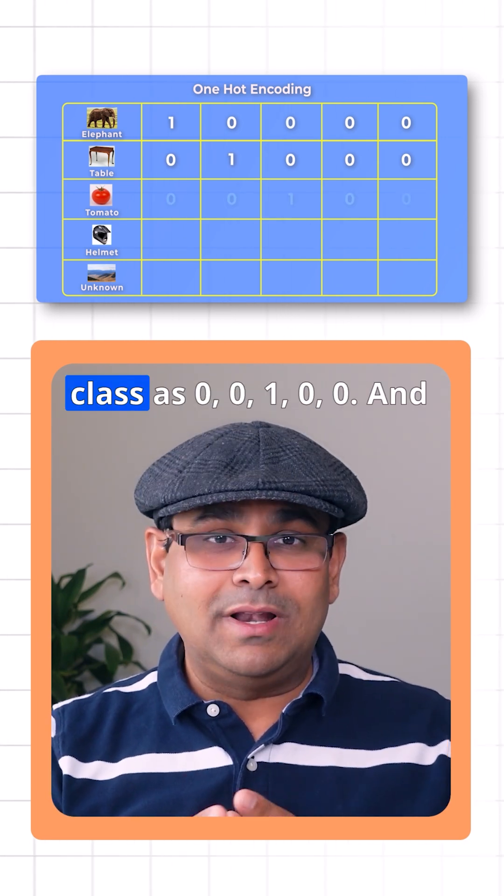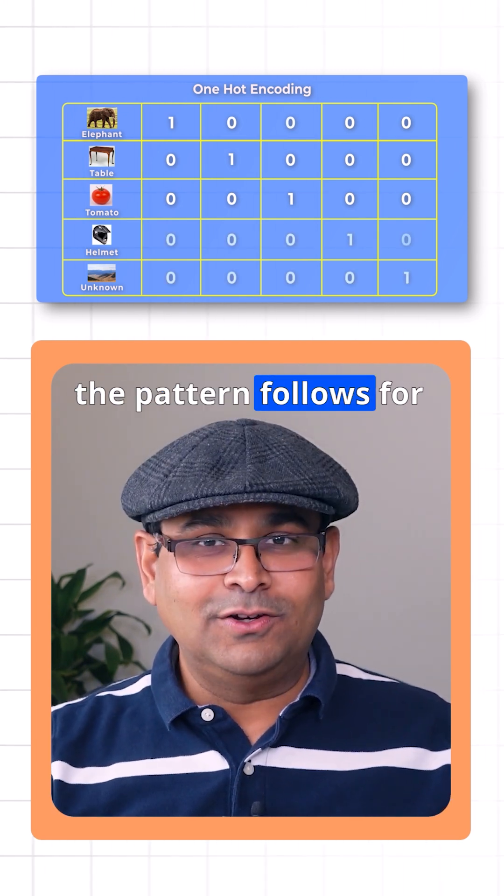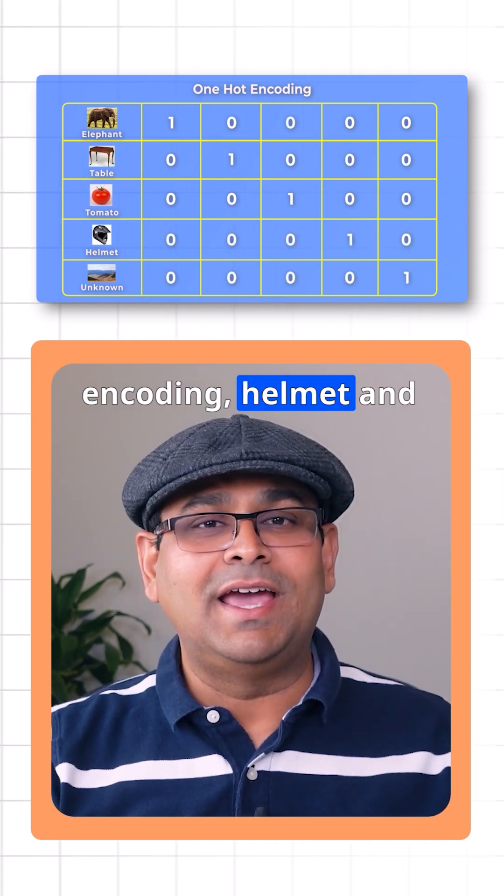Similarly, we can encode the tomato class as zero, zero, one, zero, zero. And the pattern follows for encoding helmet and unknown.